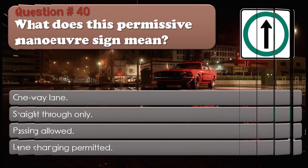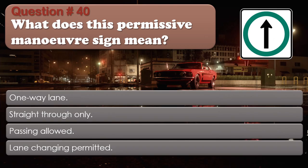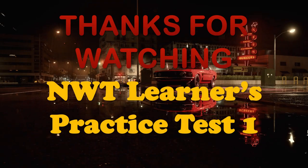Question number 40. What does this permissive maneuver sign mean? One-way lane. Straight through only. Passing allowed. Lane changing permitted. The correct answer is: Straight through only. Thanks for watching.